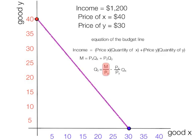Keep in mind that this is that point right there, income divided by the price of Y. And this is the slope of the line, the slope of the budget line.